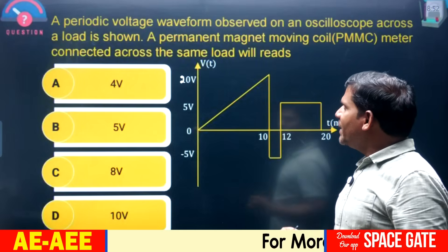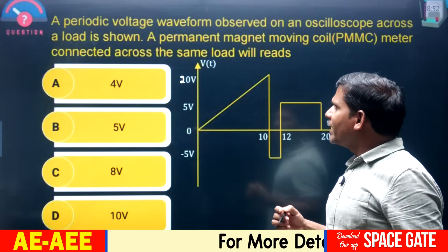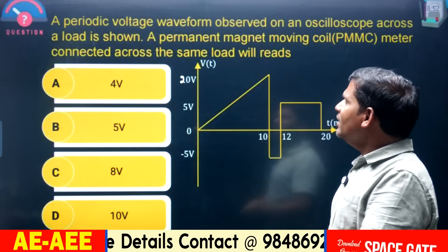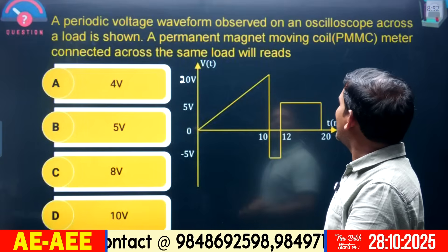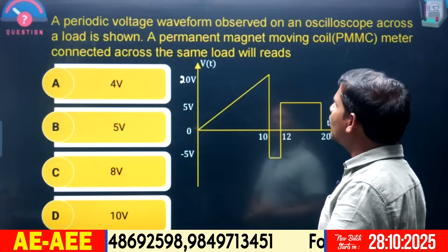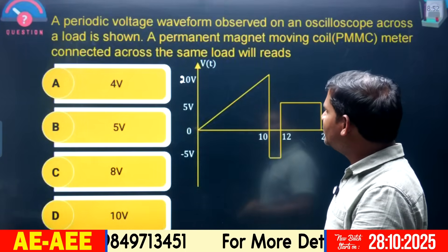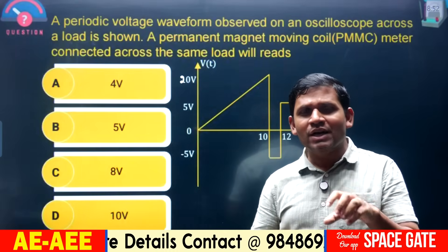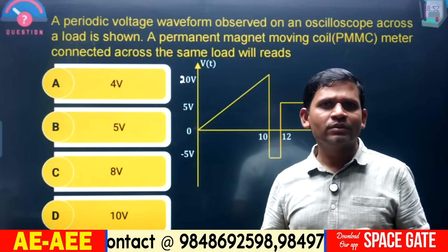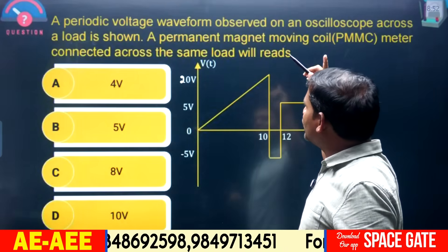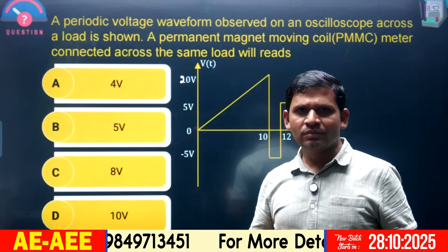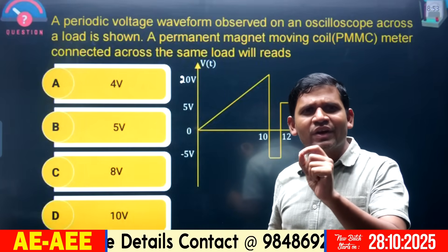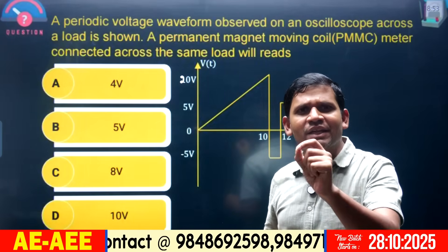This question is with respect to calculation of average and RMS values, mainly a periodic voltage waveform observed on an oscilloscope across a load. This is asked with respect to a PMMC instrument — a permanent magnet moving coil. We know that PMMC is an average measuring and average indicating meter; it measures DC values.